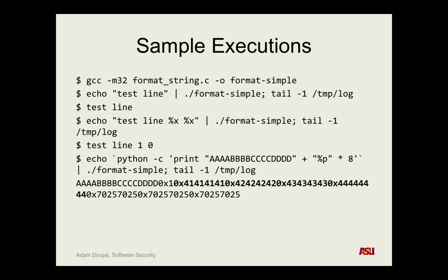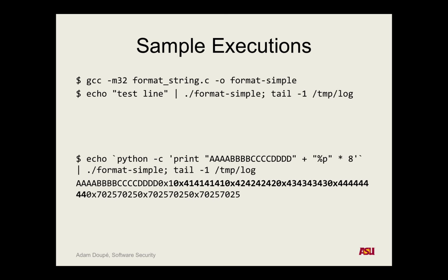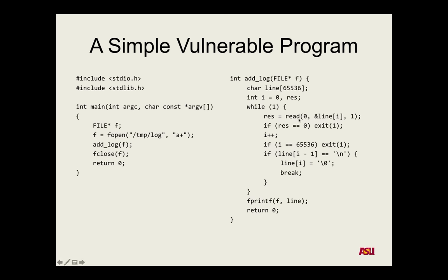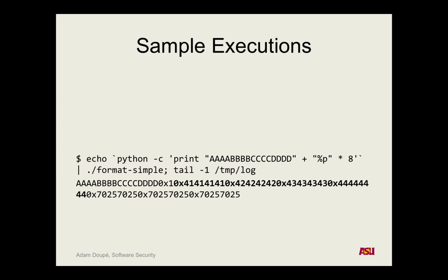So this means we essentially control the bytes — how many %P's of the stack we start controlling those bytes printed by the format string. Do we control that first %P output? Kind of — it's i, the number of lines, which is hard to control. But what about the next %P? We can completely control it. If we change those four A's to whatever we want, we can put whatever value we want there on the stack. The only restriction is we can't have newline characters in there, since the read loop stops at newlines.